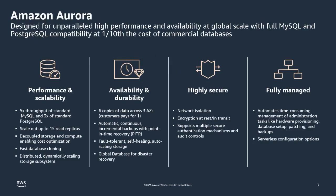Amazon Aurora is designed as a high-throughput OLTP database engine. We measure performance based on query throughput. The Postgres-compatible edition can provide roughly three times the throughput of standard Postgres, while the MySQL-compatible edition provides roughly five times the throughput of community MySQL. Aurora can scale up to 15 replicas within minutes, regardless of data volume size. Aurora maintains six copies of data spread across three availability zones using a purpose-built storage layer, which is key to Aurora database cloning.